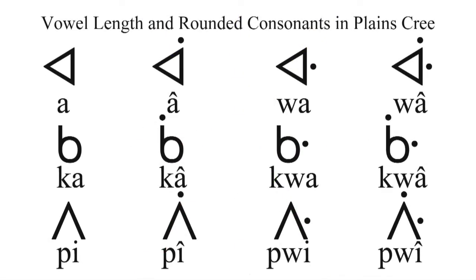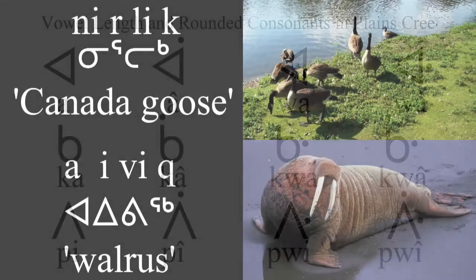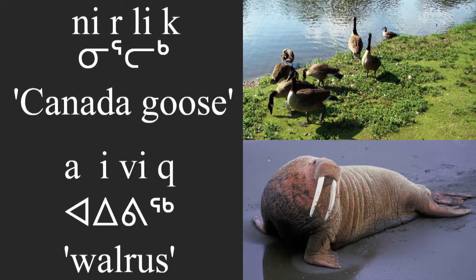Because each language has its own grammatical rules, it may have its own unique take on the characters in Canadian Aboriginal script. Cree, for example, may mark a glyph with a dot at one side to indicate lip rounding: wa, rounded from a; qua, rounded from ka; pui, rounded from pi. Inuktitut, which uses consonants such as r and v not spoken in Cree, will represent these with glyphs as well.